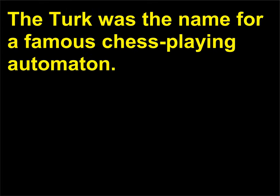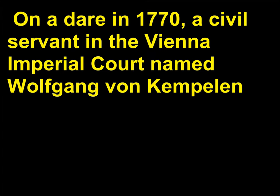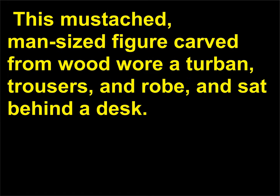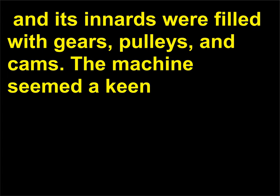What was the Turk? The Turk was the name for a famous chess-playing automaton. An automaton, such as a robot, is a mechanical figure constructed to act as if it moves by its own power. On a dare in 1770, a civil servant in the Vienna imperial court named Wolfgang von Kempelen (1734–1804) created a chess-playing machine. This mustached, man-sized figure carved from wood wore a turban, trousers, and robe, and sat behind a desk. In one hand it held a long Turkish pipe, implying that it had just finished a pre-game smoke. Its innards were filled with gears, pulleys, and cams.